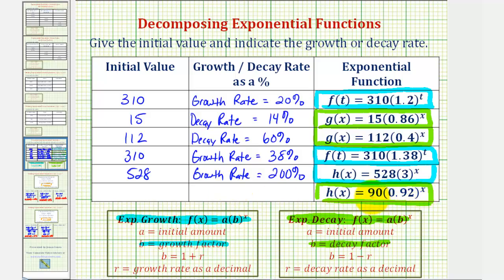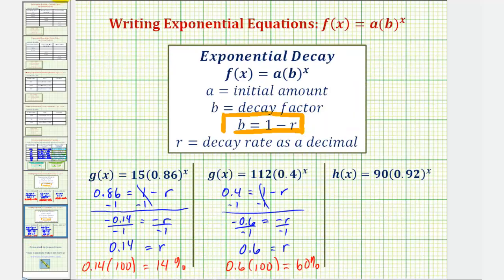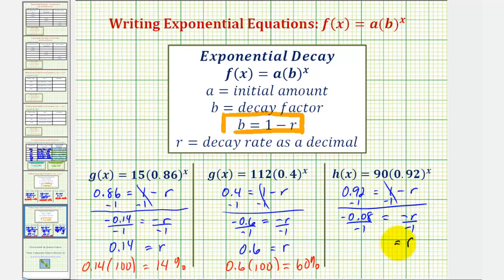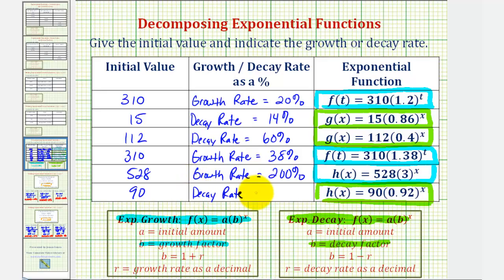Our last function is exponential decay with an initial value of 90. The decay factor or base B equals 0.92. Setting up the equation: 0.92 equals one minus R. Subtracting one and dividing by negative one gives us R equals 0.08. As a percentage, 0.08 times 100 equals 8 percent. So our decay rate equals eight percent.